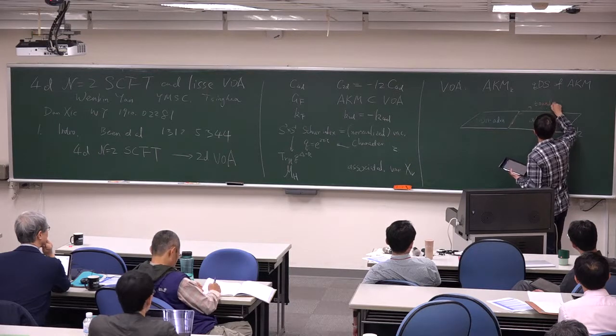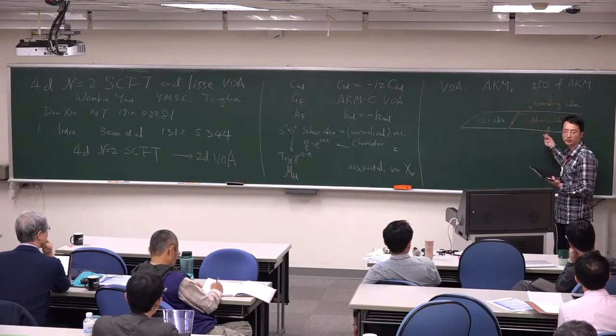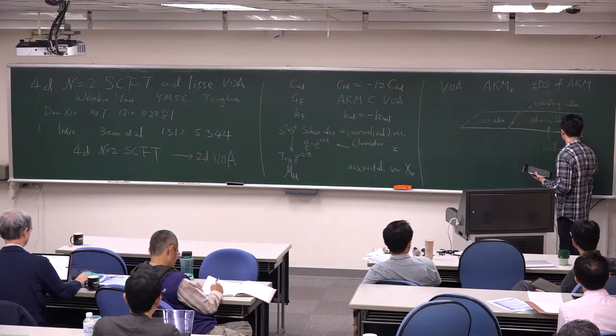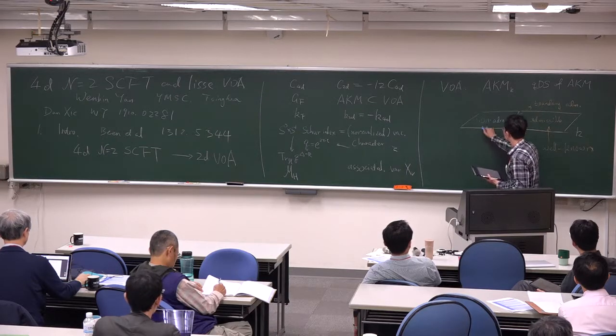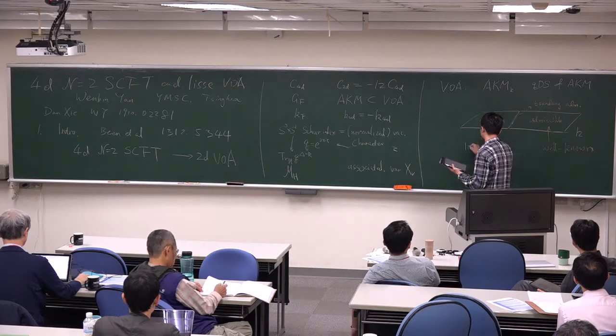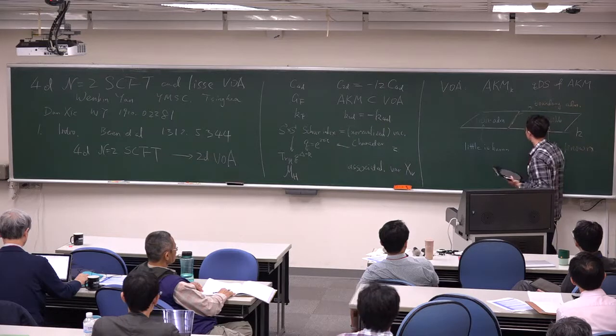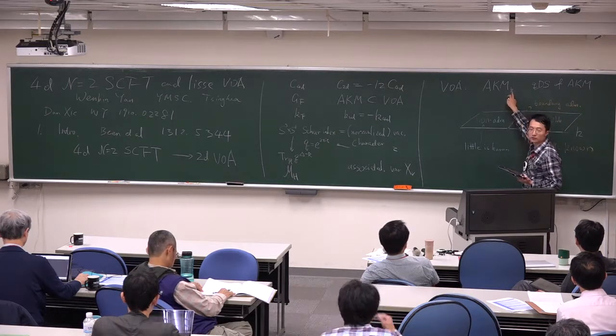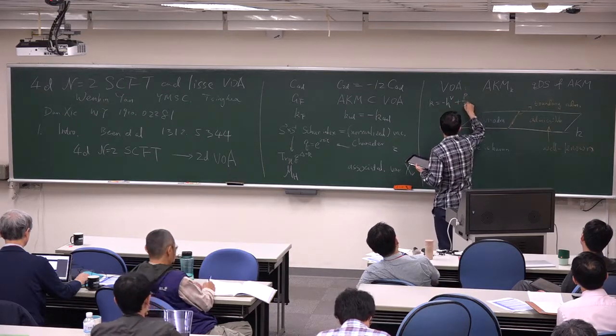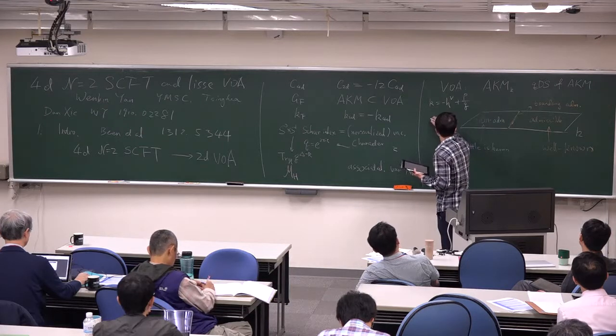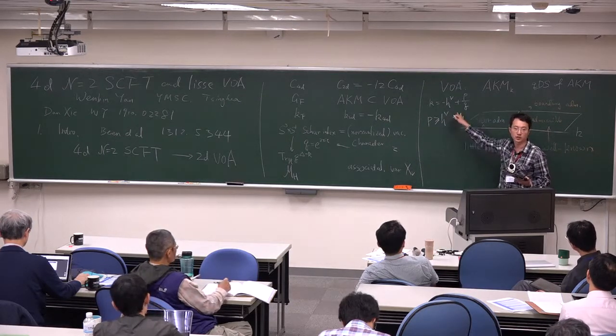And to get you some sense of physics, this quantum Drinfeld-Sokolov reduction on the 4D side is like the Higgsing of the 4D theory. Because we are always starting from Affine-Kac-Moody, so we have a level. And suppose we have the plane, we draw all the possible values for the level. Mathematicians have a classification, which one, one part they call a certain value of the level, they call it admissible. And on the other part, they call it non-admissible. Luckily, there's a boundary between admissible and non-admissible. And on the boundary, the boundary value is admissible. So I call it boundary admissible.